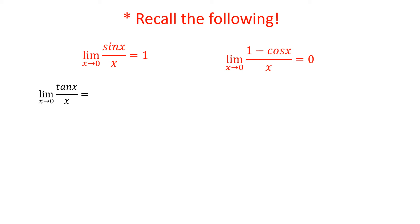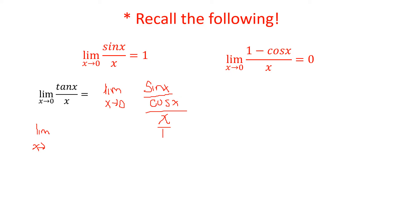So what can we do? There's no factoring we can do, but we can use a property of trig. Recall that tan(x) = sin(x)/cos(x), so this can be rewritten as the limit as x approaches 0 of sin(x)/cos(x), all over x. Just like in the previous problem, we can multiply by the reciprocal, so we get the limit as x approaches 0 of sin(x)/cos(x) times 1/x.